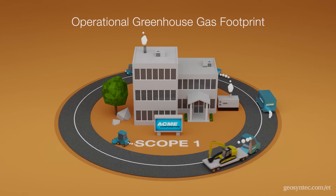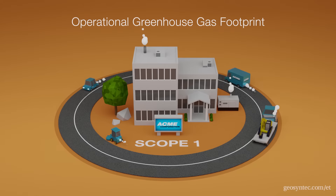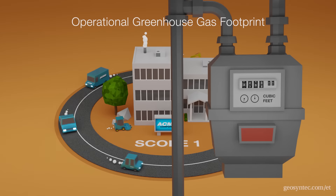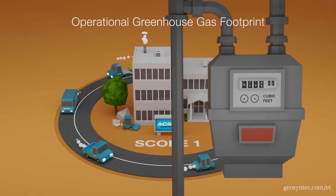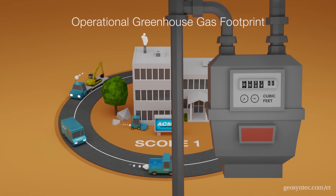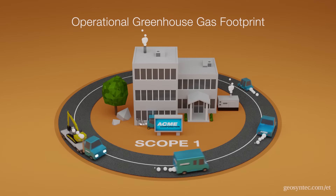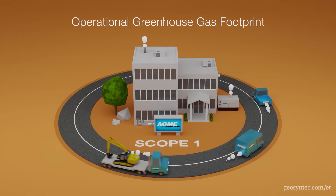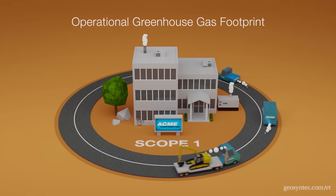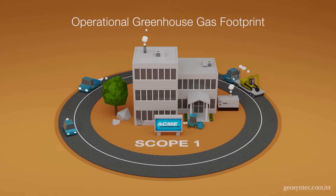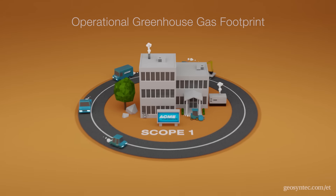Scope 1 emissions also refer to emissions from natural gas used to power heaters and steam boilers. All heat trapping gases generated by utilities and used to power operations are considered Scope 1 emissions.